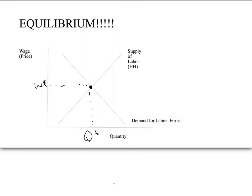If we shift demand or supply, it's still the same as it was for a product market. Shifting an increase means shifting supply and demand to the right. Any decrease in supply or demand, you shift both curves to the left, depending on what you're talking about. Graphically speaking, it's the same shifting of the curve as in the product market.